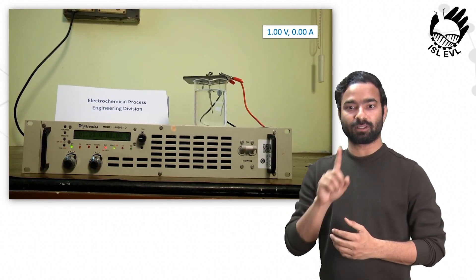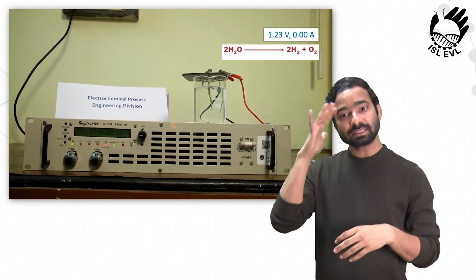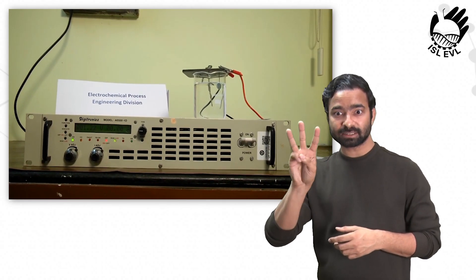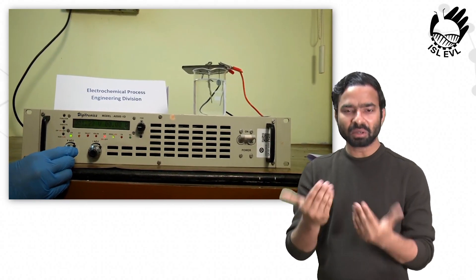Now, let's try with the theoretical value of 1.23 volt at which water splitting reaction occurs. At this condition, there is no change observed in the electrochemical cell.